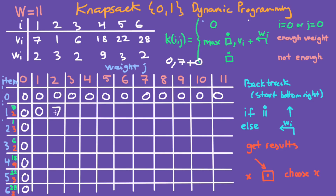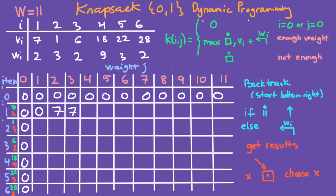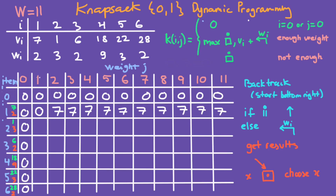For total weight 3 with item weight 2, it is possible to take this item. The max of the number at the top (0) and vi (7) plus moving up once and left two times (giving 0) is 7. For total weight 4 it's also enough weight, so again the max of 0 and 7 plus moving up and left two times equals 7. You can fill in the rest of these and they all come out to 7.